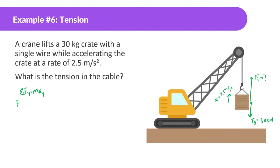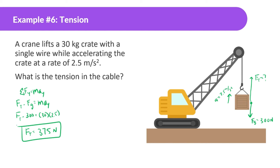Sum of all forces in the Y equals mass times acceleration of Y. We have force of tension going up and force of gravity going down, with mass of the crate and its acceleration. Force of tension is what we're looking for. Force of gravity is 300 newtons. Mass is 30 kilograms, and it's accelerating upward at 2.5 meters per second squared. So 30 times 2.5 plus 300 gives a force of tension of 375 newtons.